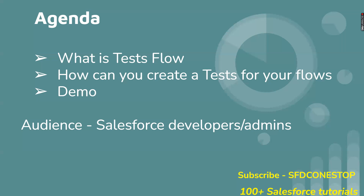The business use case is: whenever you have a case which is created, if a case is created with the status or the priority as high, then you would want the escalated field to be automatically selected. This is a very simple business use case and we have created a flow for that. Now we will see how you can make use of this Test Flow within the flow that we have built.